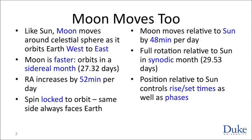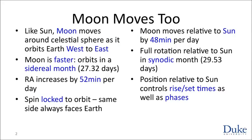But the moon orbits the Earth much faster. The moon completes one orbit about the Earth in what is called the sidereal month, which is about 27 and a third days. This means its right ascension increases by 52 minutes per day.